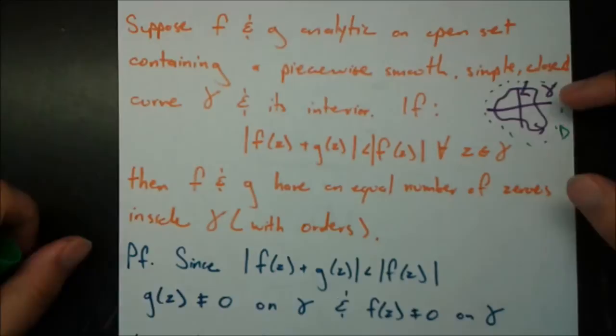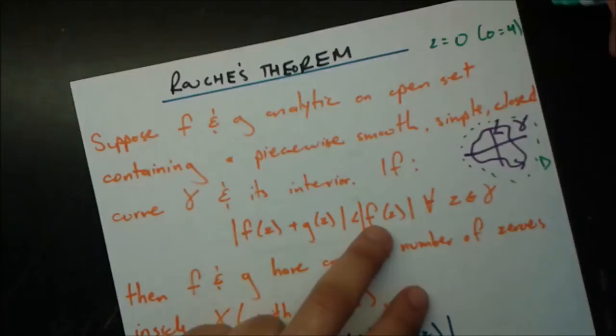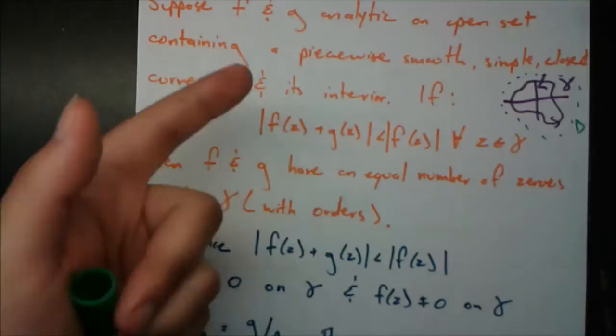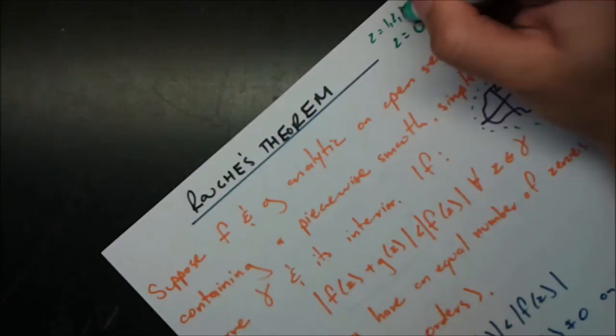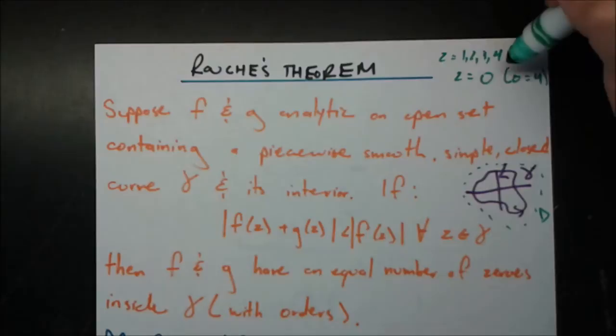Remember, counting orders means, for example, if f(z) has a zero at z = 0 with order four, then g(z) also has four zeros total — but they can be arranged differently. For instance, g(z) could have zeros at z = 1, 2, 3, and 4, each of order one. You just add up the orders and make sure those totals are the same. We'll see an example of that when we do our example.